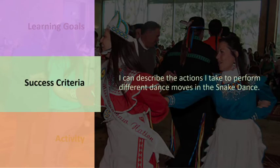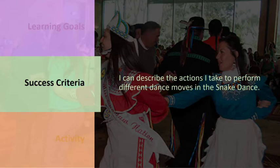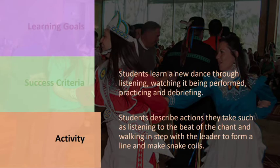In this example, the learning goal is: I understand and can use action words to describe the dance moves we practice. The success criteria specify concretely how students will demonstrate their learning — just one of many ways the goal could be assessed, written in language students can understand. In this case: I can describe the actions I take to perform different dance moves in the snake dance. The activity is both how students will develop the learning and how they will demonstrate their success — students learn a new dance by listening, watching it being performed, practicing, and debriefing. Students describe actions they take, such as listening to the beat of the chant and walking in step with the leader to form a line and make snake coils. You can see how tightly connected learning goals, success criteria, and activities are, and how one builds on the other.